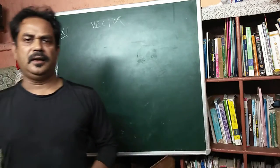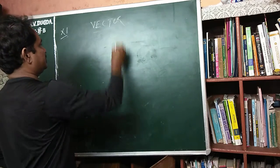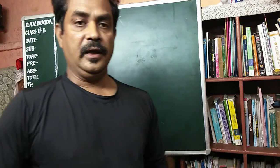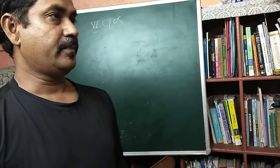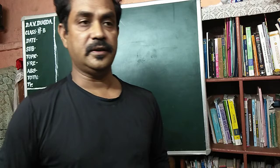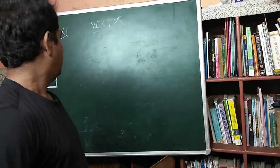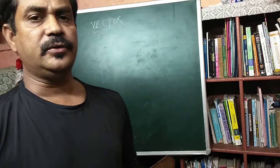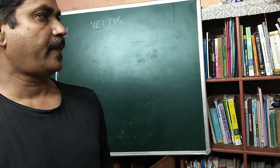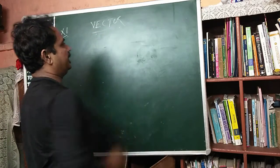So, class 11 students, your chapter starts with vector. We will use some new operations to deal with our physical quantities — that means the quantities which we use in physics. In physics, we deal with two different kinds of quantities: one is scalar and one is vector. We will discuss about vectors in the coming few videos.